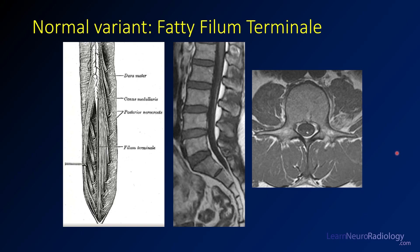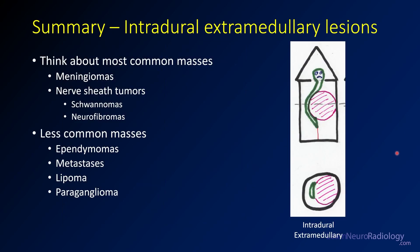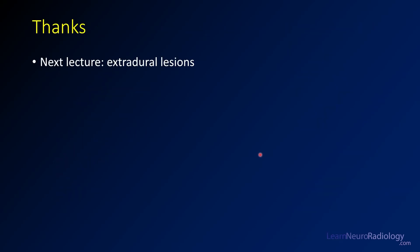In summary, we've taken a look at the intradural extramedullary lesions. The most common ones are meningiomas and nerve sheath tumors. There are also a number of less common masses: ependymomas, metastatic disease and drop mets, fat-containing lesions like lipoma, and paraganglioma — which is your ependymoma that looks like it has flow voids. Keep those things in your differential when you see a lesion that's intradural and extramedullary. Thanks for tuning in. Check out the lectures on intramedullary lesions and the introduction, and our next lecture will cover truly extradural lesions to complete your differential diagnosis.